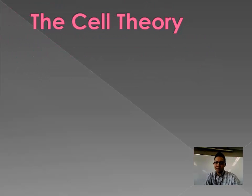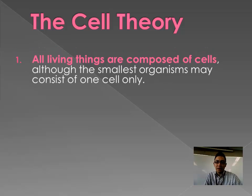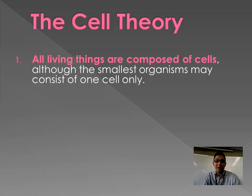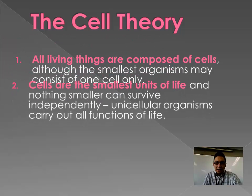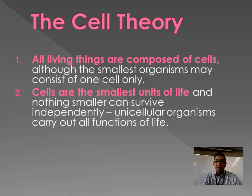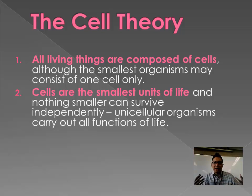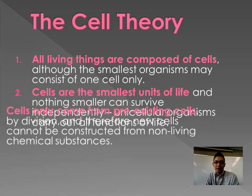That brings us to cell theory, which rests on three things. First, all living things are composed of cells — the smallest organisms may consist of one cell only, like bacteria and protists; amoeba is the most famous example of a protist. Second, cells are the smallest units of life — if you take the parts of a cell apart, those individual things cannot actually perform the functions of life.